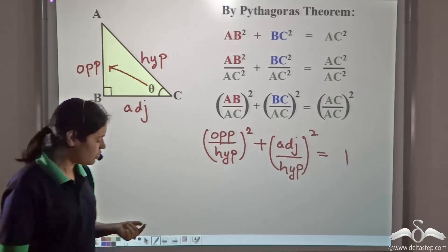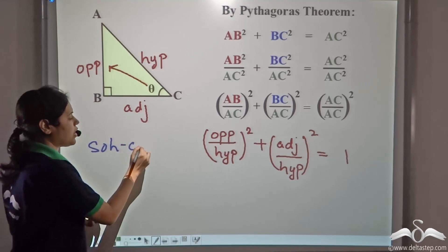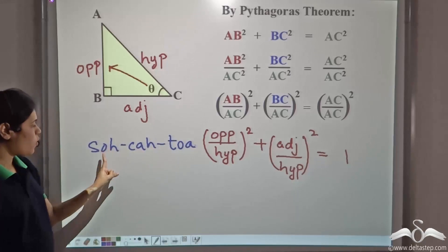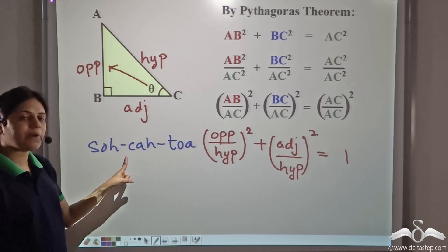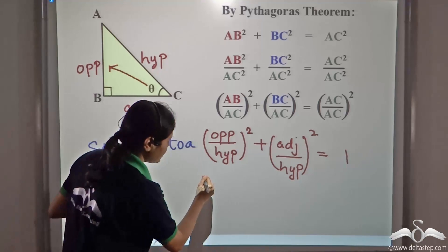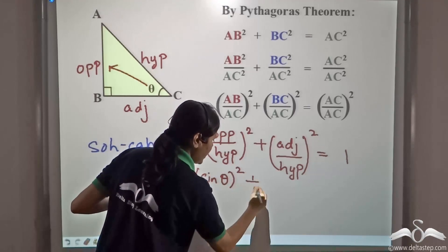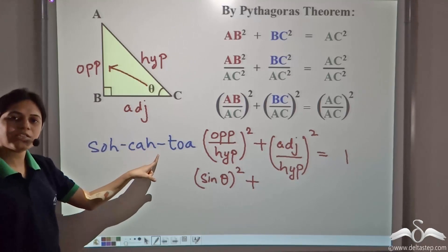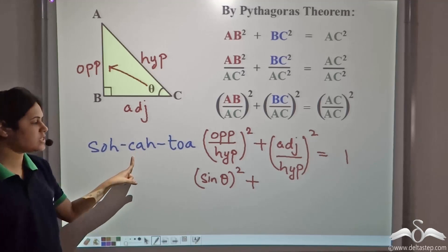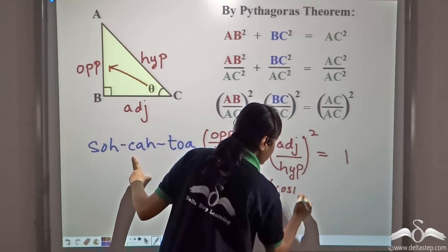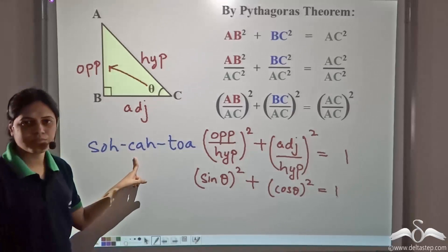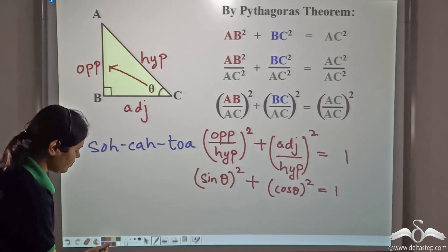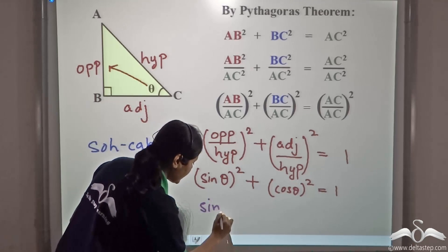Now, what is opposite by hypotenuse? From SOHCAHTOA — opposite by hypotenuse is sin. So, sin θ equals opposite by hypotenuse. And adjacent by hypotenuse — from CAH — adjacent by hypotenuse is equal to cos θ. So this becomes sin θ whole square plus cos θ whole square. Now, sin θ whole square is equal to sin θ into sin θ, which can also be written as sin²θ.